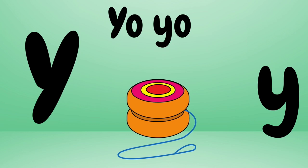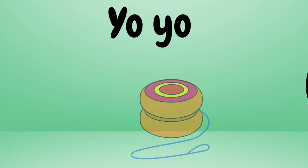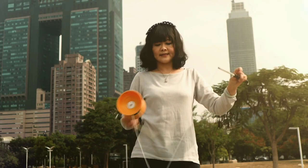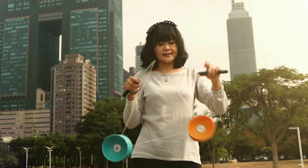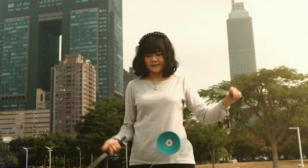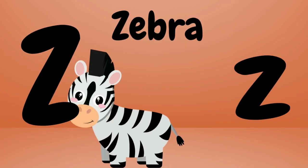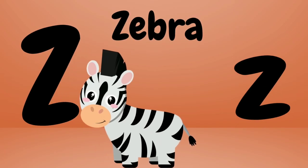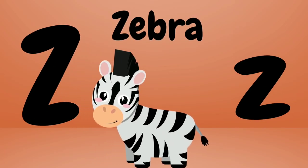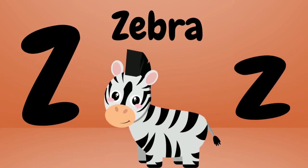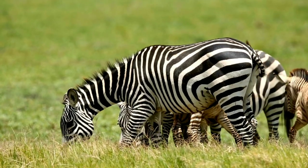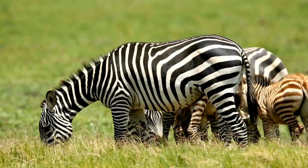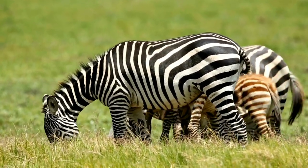Y is for yo-yo. Yo-yo. Yo-yo. This is a yo-yo. Yo-yo. Z is for zebra. Zebra. Zebra. This is a zebra. Zebra.